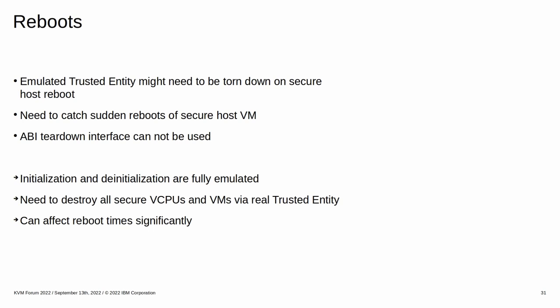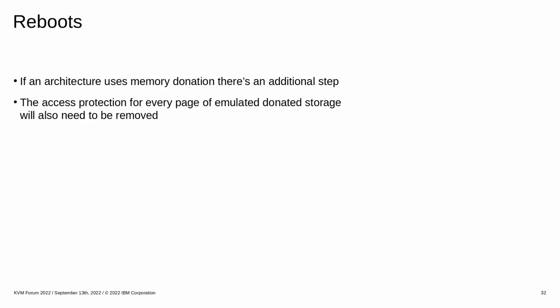A lazy destroy approach to this problem might improve reboot times, but it will add more complexity to the API emulation. We also need to emulate a trusted entity teardown on a level 1 reboot. As we multiplex the real trusted entity, we can't use its teardown mechanisms, as they would destroy all secure VMs created by any of the other level 1 guests. Every level 2 secure VM created by a rebooting level 1 hypervisor will need to be destroyed by level 0 via the trusted entity before the reboot finishes. If an architecture uses memory donation, the access protection for every page of emulated donated storage will also need to be removed before rebooting.